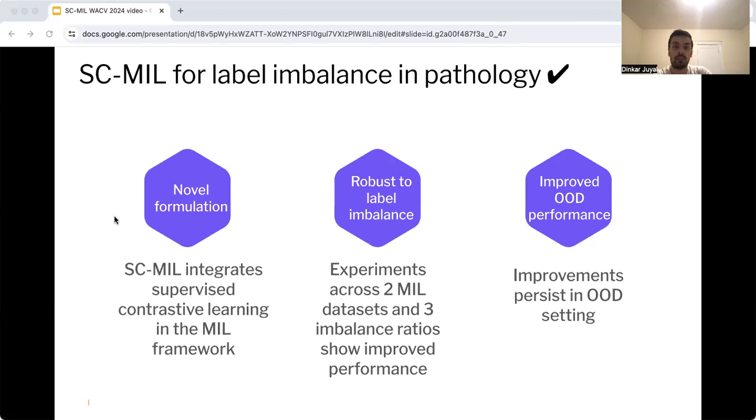In summary, label imbalance in pathology is a challenging problem owing to the highly skewed distribution of classes, both at the dataset and the WSI level. We propose SCMIL, a novel integration of supervised contrastive learning into the MIL framework to tackle this label imbalance problem. Experiments show our bag-level formulation to be superior to patch-level SCMIL and other baselines across multiple degrees of label imbalance, and these improvements persist in OOD settings. We hope that these results drive adoption of MIL in real-world clinical applications. Thank you.